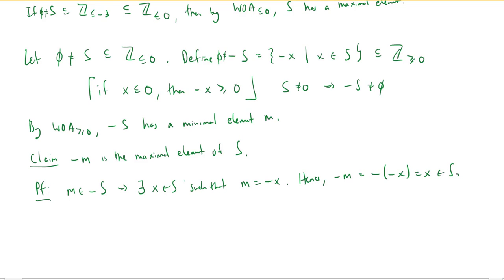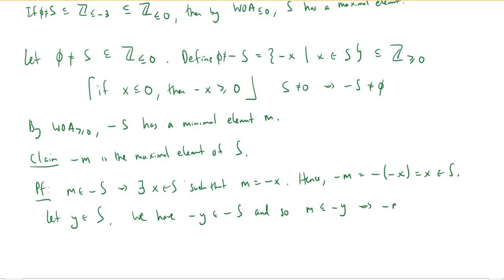Now why is -m maximal? Let y be any element of S. Then -y is an element of -S. Because m is the smallest element of -S, we know m ≤ -y. Multiplying both sides by -1 gives -m ≥ y. So every element y in S is less than or equal to -m, which shows that -m is the maximum element of S.